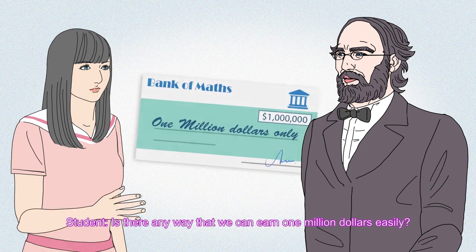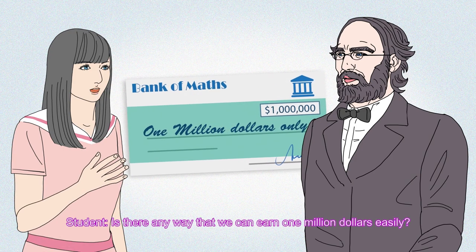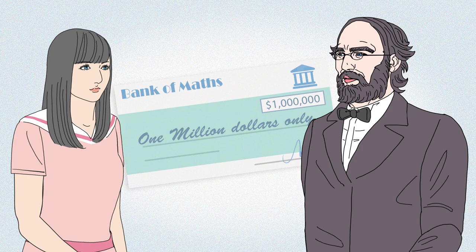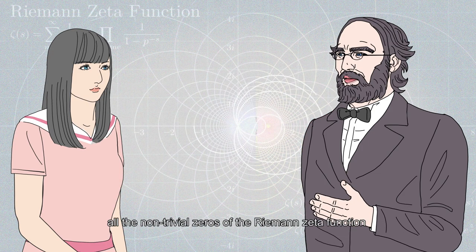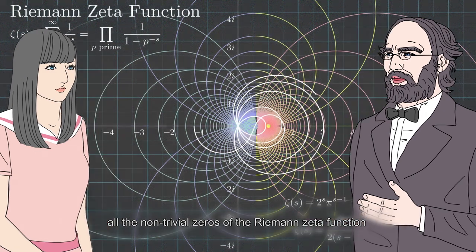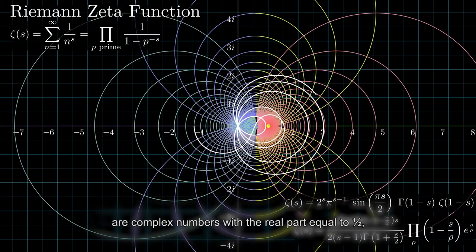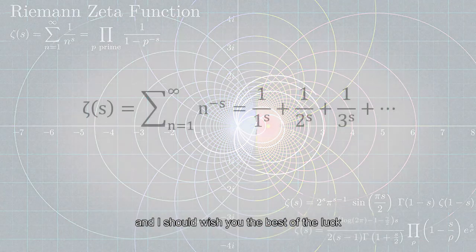Is there any way that we can earn one million dollars easily? Oh yes, if you can show that all the non-trivial zeros of the Riemann zeta function are complex numbers with the real part equal to one half, and I should wish you the best of luck.